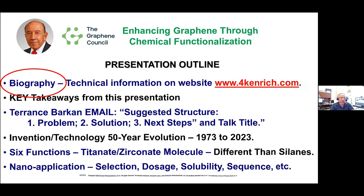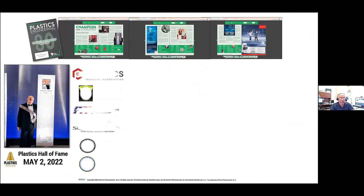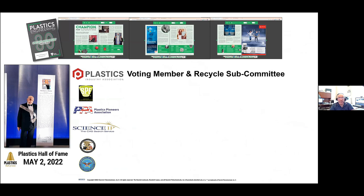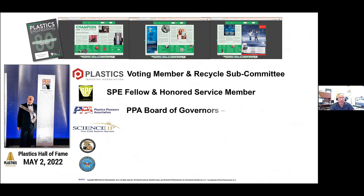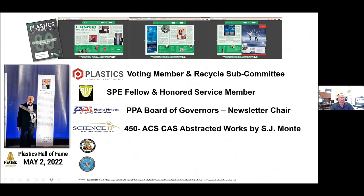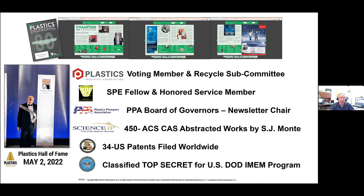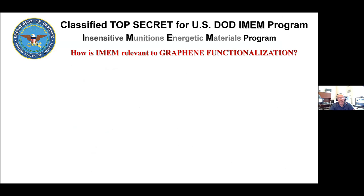A little bit about who I am. I am a participant in many organizations. I'm a voting member of the Recycle Subcommittee, an SBE fellow, honor and service member, and on the board of governors of the Plastic Pioneers Association. I have over 450 ACS CAS-abstracted works and 34 U.S. patents found worldwide. I've been classified top secret for the U.S. Defense Sensitive Munitions and Energetic Materials Program.